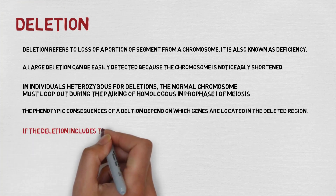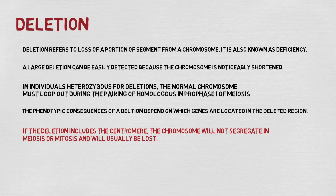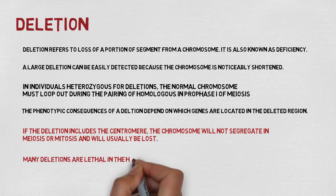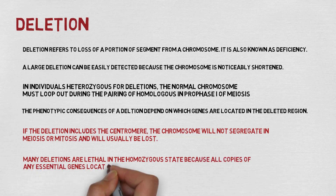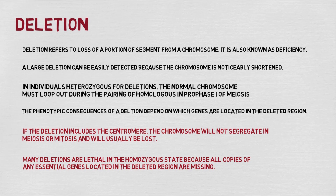The impact of deletion is more dangerous and lethal than other chromosomal rearrangements. In some cases, if the deletion includes the centromere, during cell division, after spindle fiber formation, the spindle fiber attaches to the centromere. So if there is no centromere, the chromosome cannot move during cell division and will eventually be lost, along with all the rest of the chromosome segment.